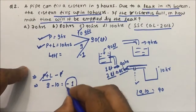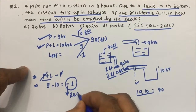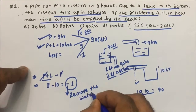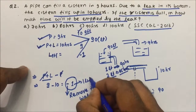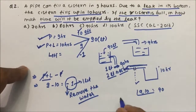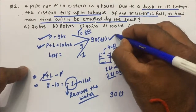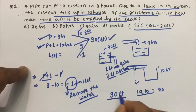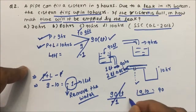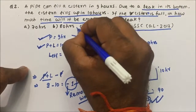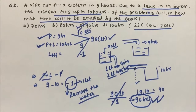The total capacity of the tank is 90 liters. The leak removes 1 liter per hour, so it will take 90 hours to empty the full tank. The negative sign confirms the leak is removing water. So the answer is 90 hours. This is an easy question asked in SSC CGL 2013. Thanks for watching the video.